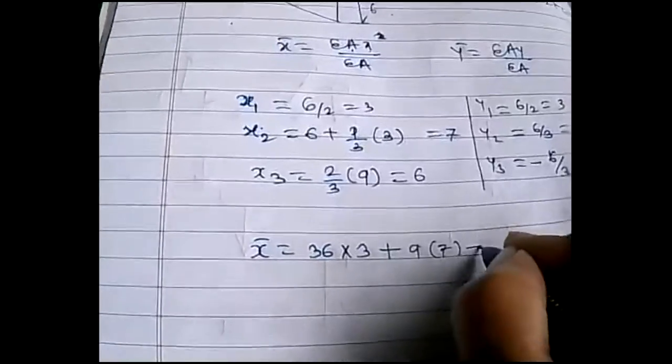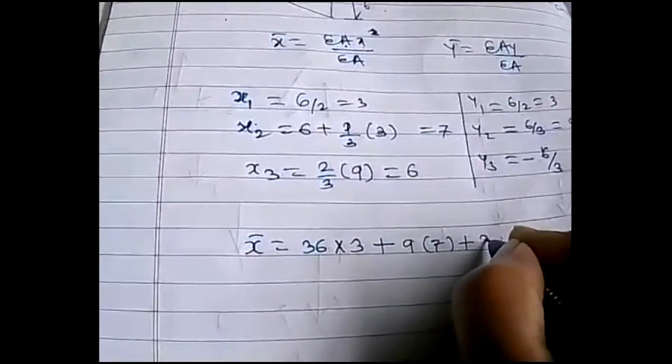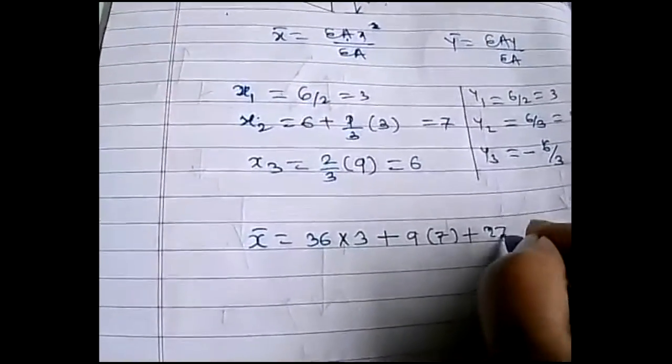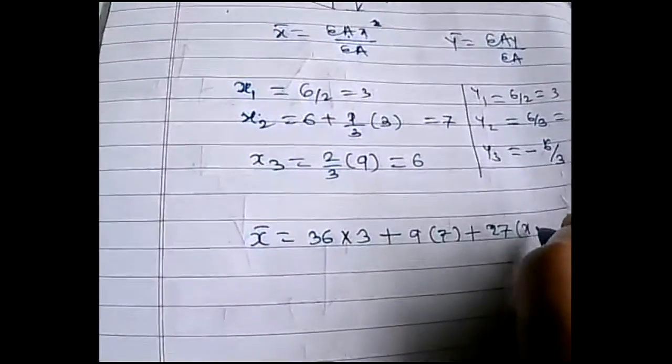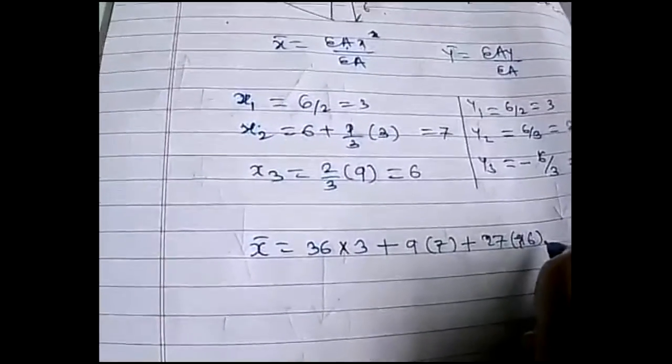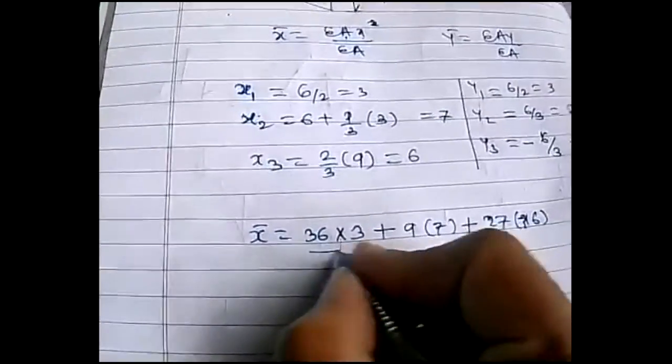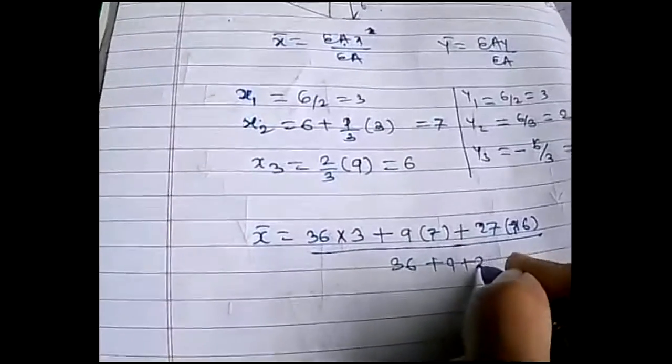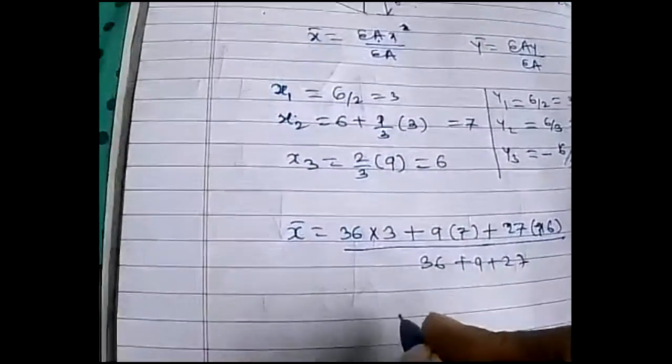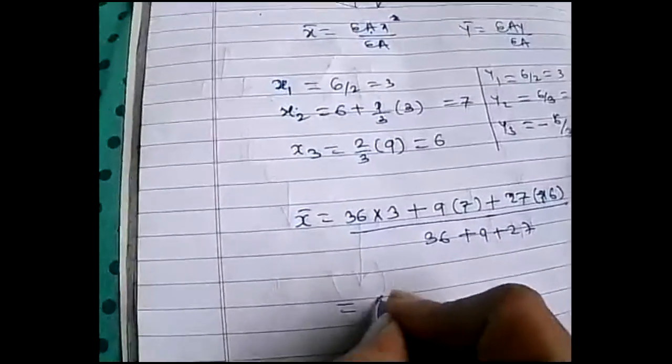Now substituting into the formula for x̄: (A1·x1 + A2·x2 + A3·x3) / (A1 + A2 + A3) = (36×3 + 9×7 + 27×6) / (36 + 9 + 27), which comes out to be 4.625 cm.